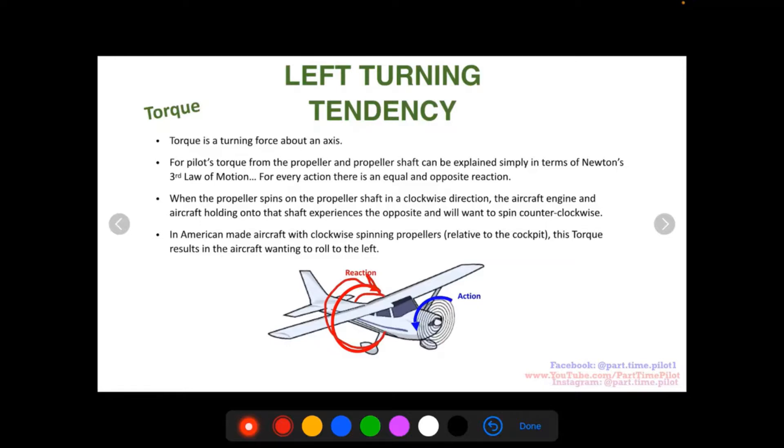the propeller here is spinning this way, and then you get the reaction of the aircraft wanting to spin the other way, which in effect is like a roll to the left. Again, with our other two factors that we've talked about, this leads to the left turning tendency that accumulates and makes it very noticeable for a pilot, especially again in low speed and high power.